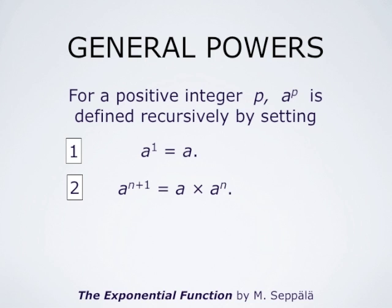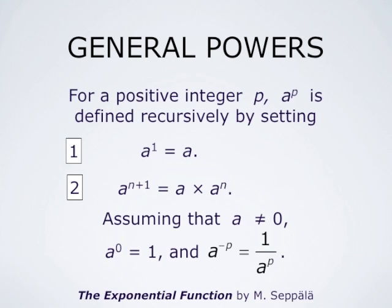For positive integer p, a to the power p is defined recursively by setting a to the power 1 equal to a, and a to the power n plus 1 equal to a times a to the power n. If a is different from 0, then we define a to the power 0 as 1, and a to the power negative p as 1 divided by a to the power p.